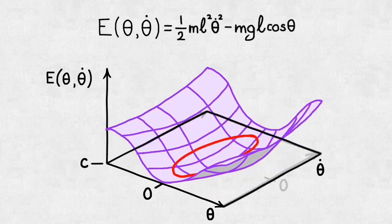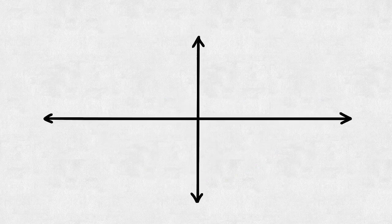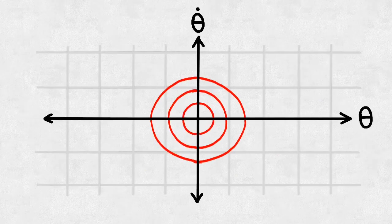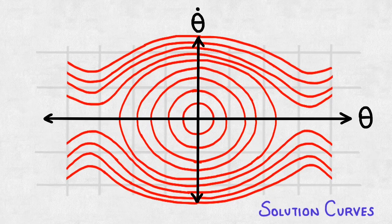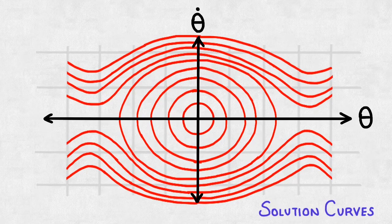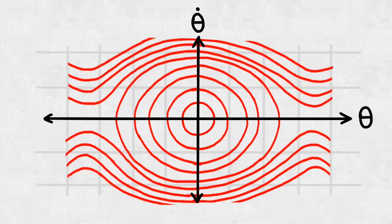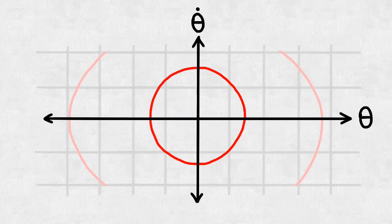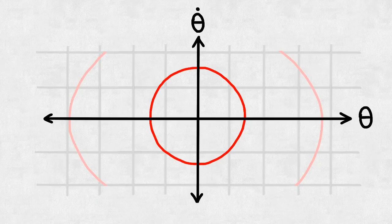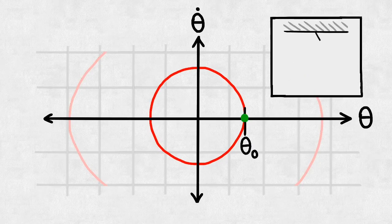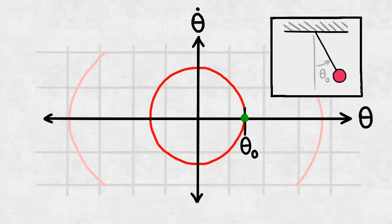We could plot the red solution curves in phase space, a space in which each point represents a unique state of the system. Jumping into phase space can be a useful way to paint a sort of portrait of how a system changes as time passes. If we zoom in close to the center of the plot, where the range of theta is very small, things look suspiciously circular.